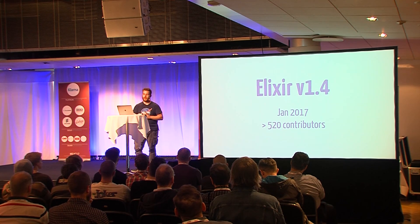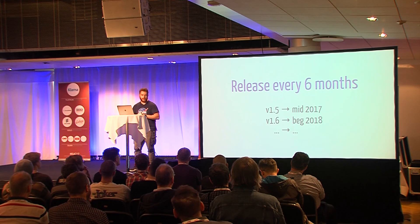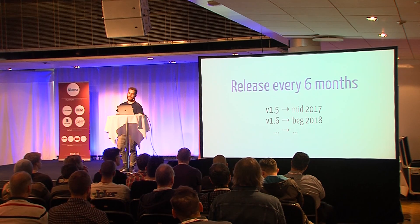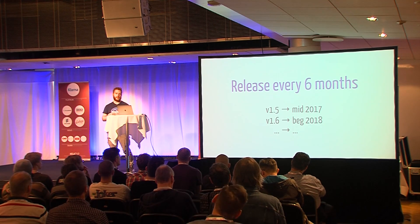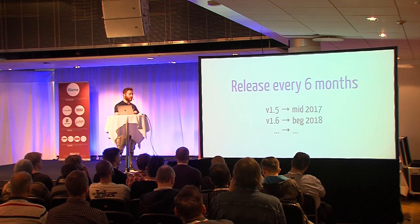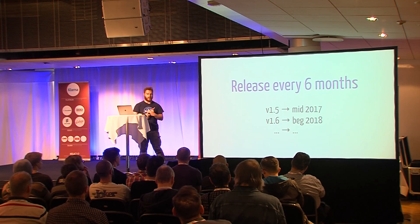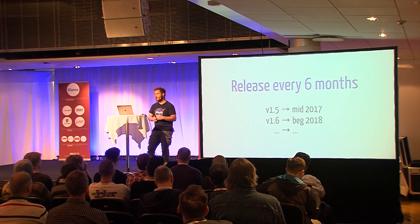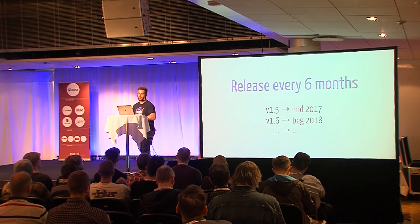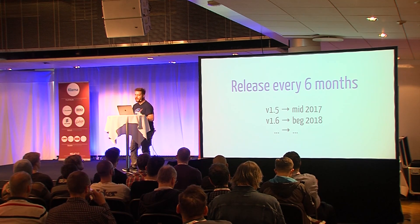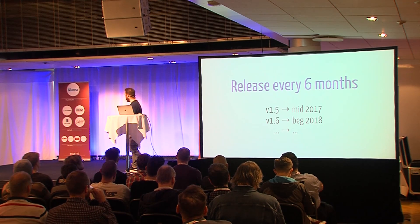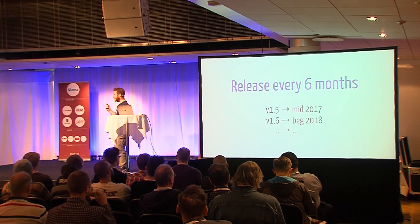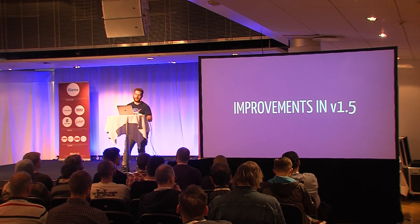So right now we're at version 1.4, and the plan is to do releases of minor versions every six months. The next version will be version 1.5, which will be out as soon as OTP 20 is out, and then we'll do six-month releases basically. So the first thing I want to talk about is the improvements in Elixir 1.5.